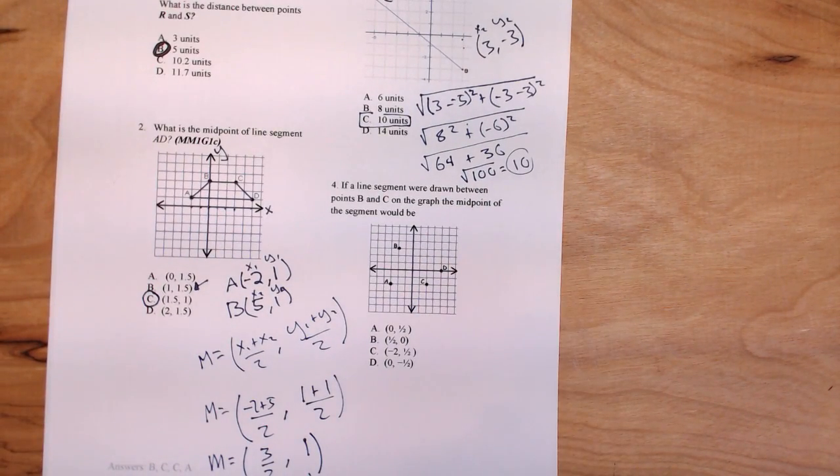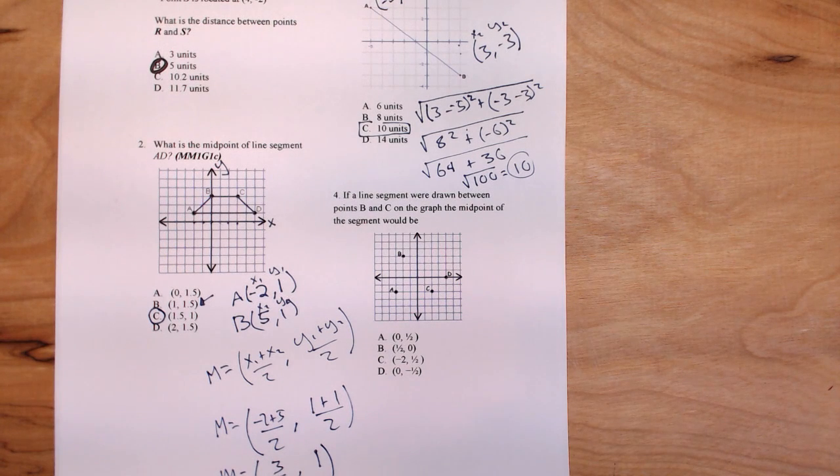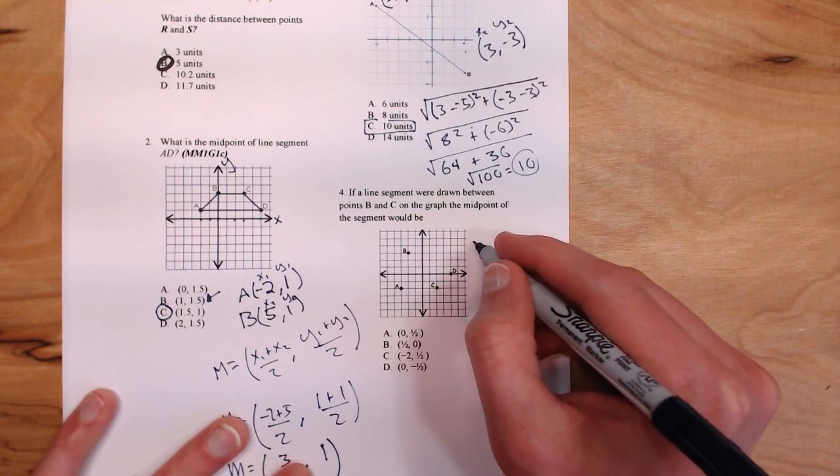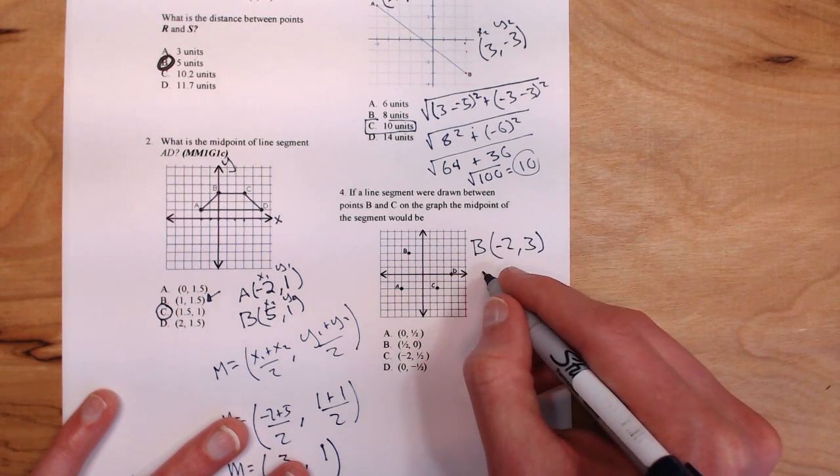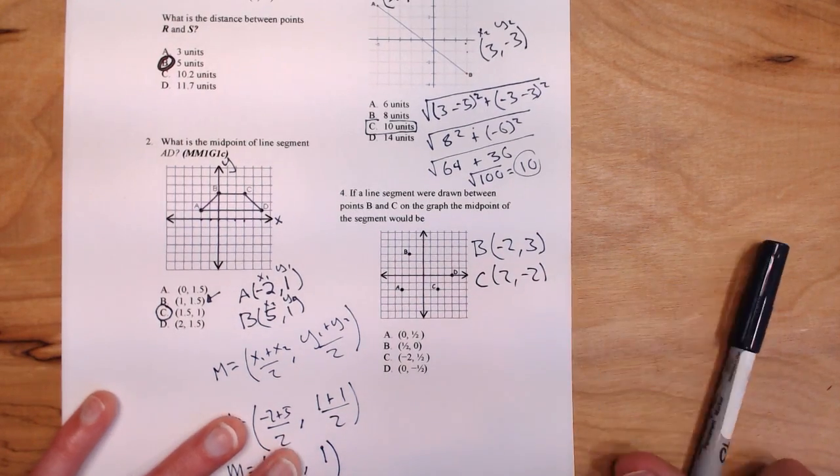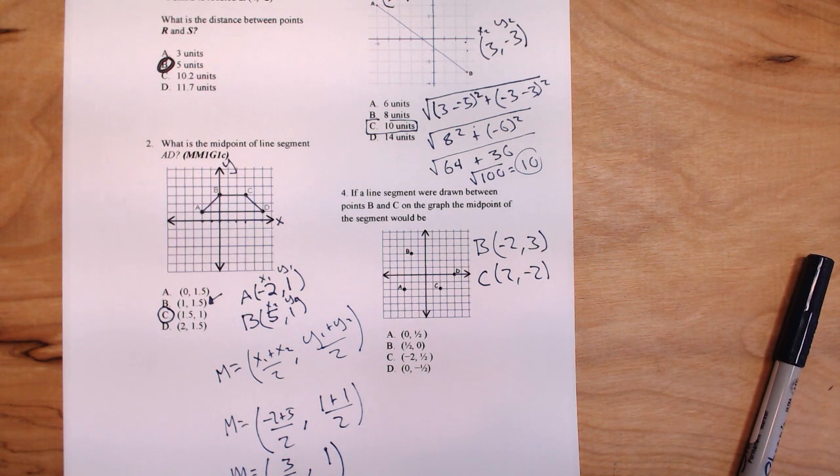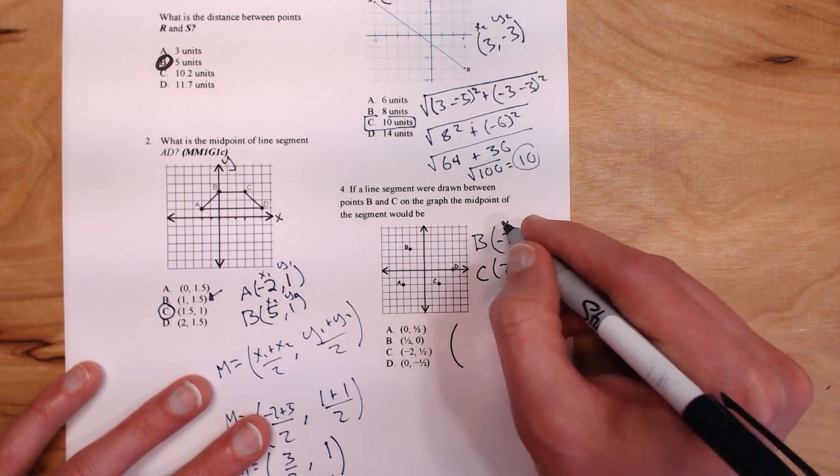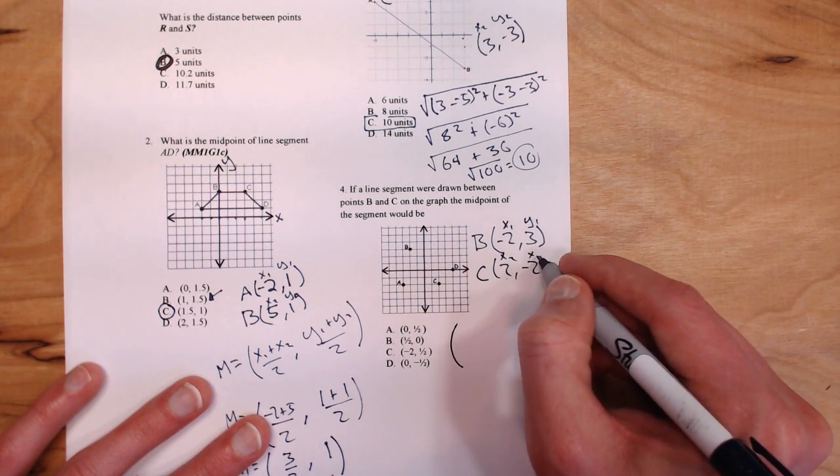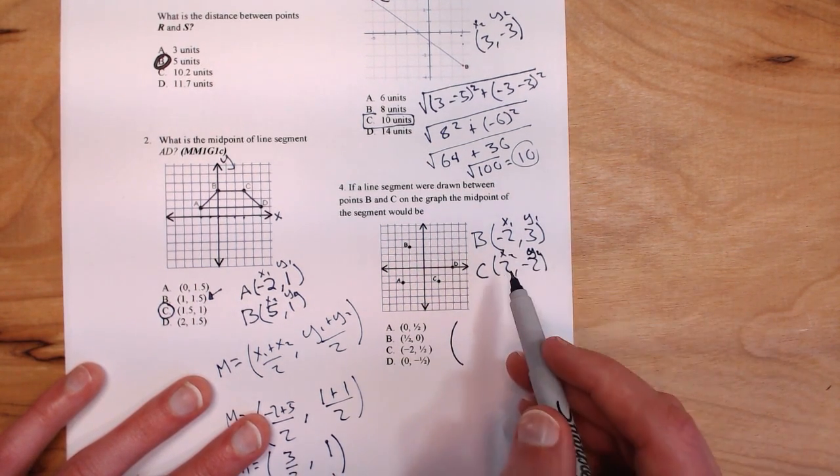Last problem, this is number four. It says, if a line segment were drawn between points B and C on the graph, the midpoint of the segment would be... So like usual, our job is to find some coordinates here. The coordinates of point B look like they are negative 2, comma 3. And the coordinates of point C are 2, comma negative 2. So now we need to apply our midpoint formula. You should have it memorized. If you don't, I want you to stop right now, pause the video, memorize it, and then come back. We're going to do x1 plus x2, but I want you to label these on your test. So x1, y1, x2, y2.